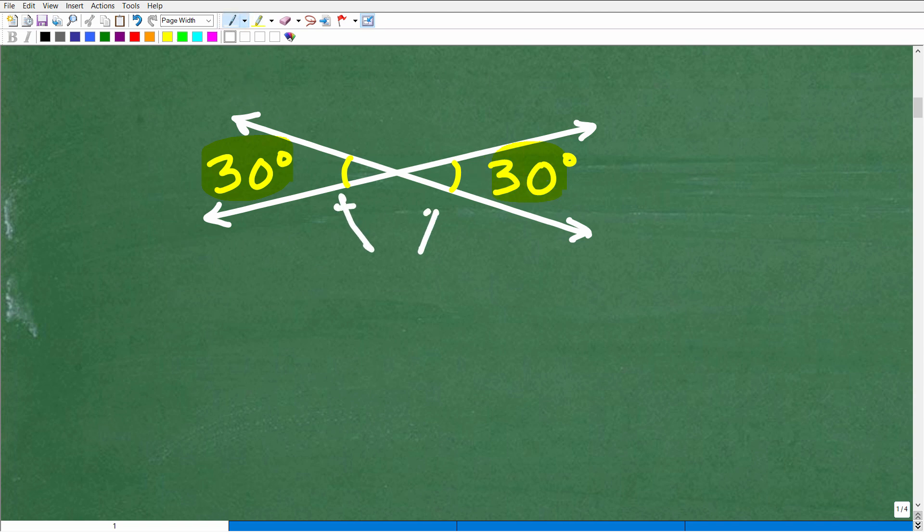This is really basic important stuff in geometry, but the main property you need to understand is that vertical angles are equal or congruent, which means they have the same angle measure. So if this angle here is 30 degrees, then this angle here is going to be 30 degrees as well.